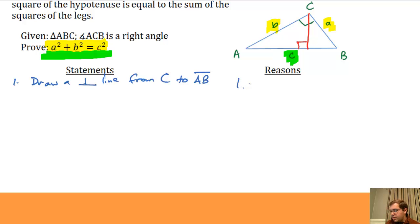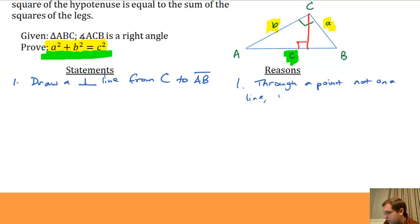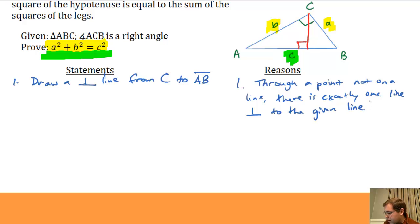What allows me to draw a perpendicular line like that? How do I know such a thing exists? Because we had a theorem from the beginning of the course: through a point not on a line, there is exactly one line perpendicular to the given line. So since such a perpendicular line exists, I can draw it. That's my reason for why I'm able to draw it.